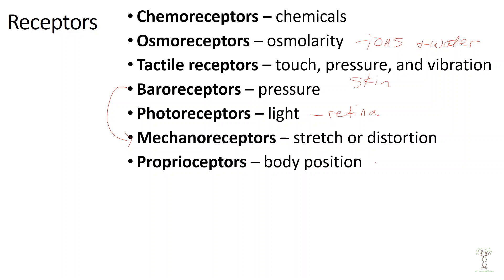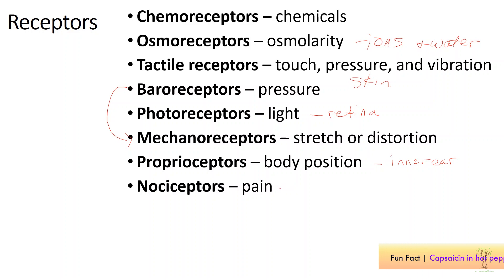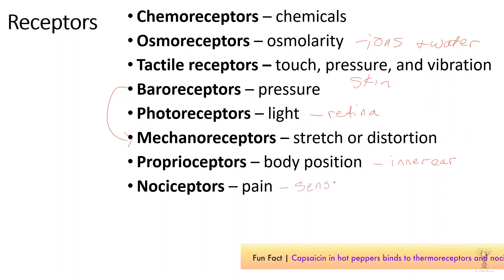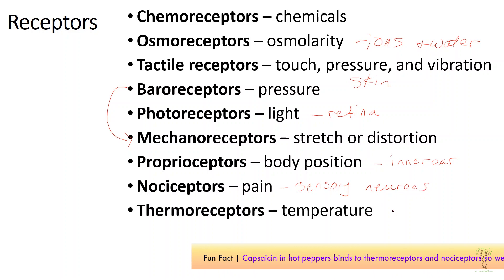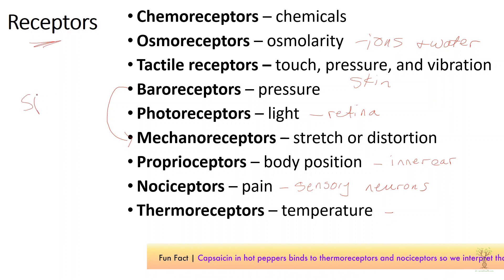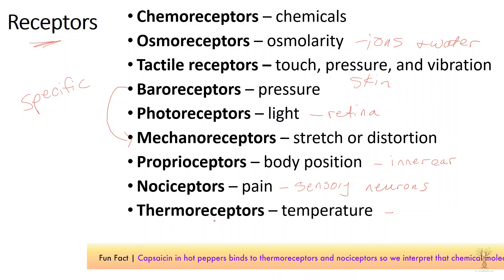Proprioceptors detect your body position — we have these in our inner ear to help us know if we're moving, standing, sitting, or lying down, and we can tell where our body parts are. Nociceptors detect pain; these are not a specific membrane protein but can be nerve endings of sensory neurons. Thermoreceptors detect temperature. The key point about receptors is that they are all specific — thermoreceptors can only detect temperature, nociceptors can only detect pain.